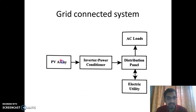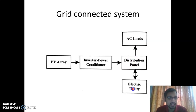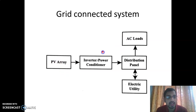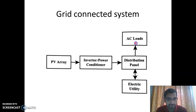If the electricity from the PV array is higher than our own load, the excess power can be exported to the electric utility. Whereas if the generation from the PV array is less than our own load, the consumer imports the shortage of power from the utility to run their loads.